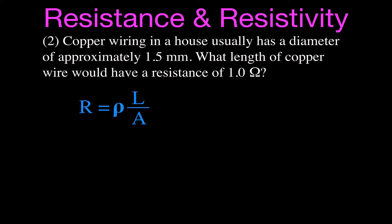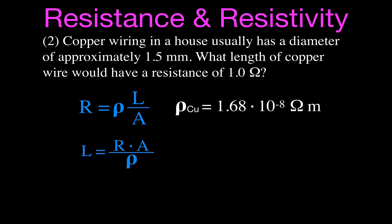Problem number two: we have copper wiring in a house, which usually has a diameter of approximately 1.5 millimeters. We want to know what length of copper wire would have a resistance of 1 ohm. Copper has a resistivity of 1.68×10⁻⁸. We're given the resistance, the resistivity, and the diameter, so we can get the area and solve for the length. Algebraically, the length equals resistance times area divided by resistivity.